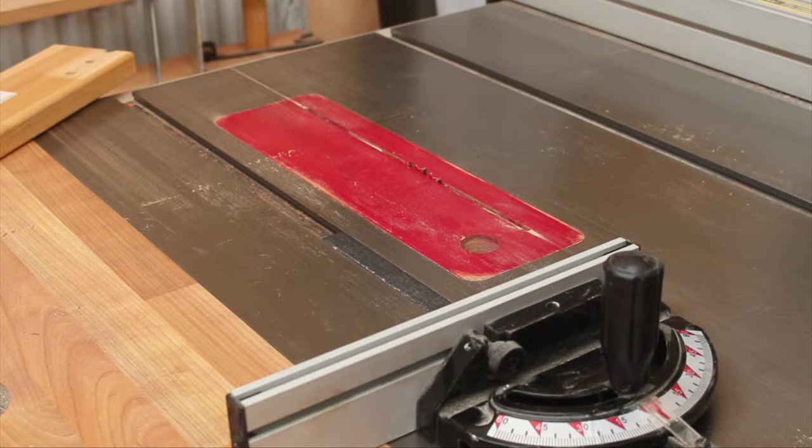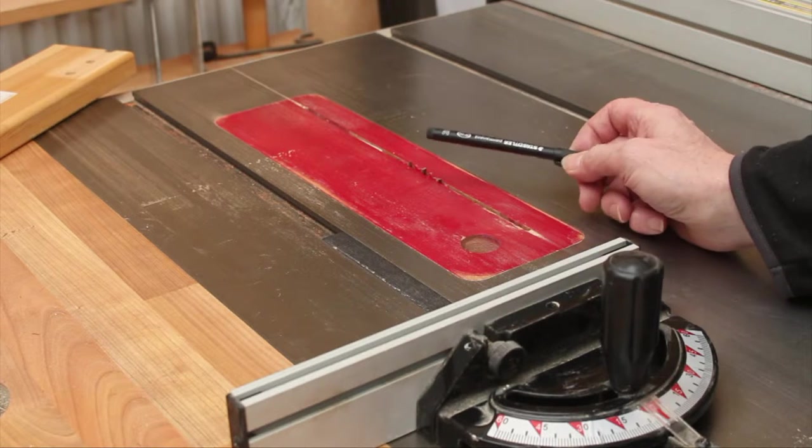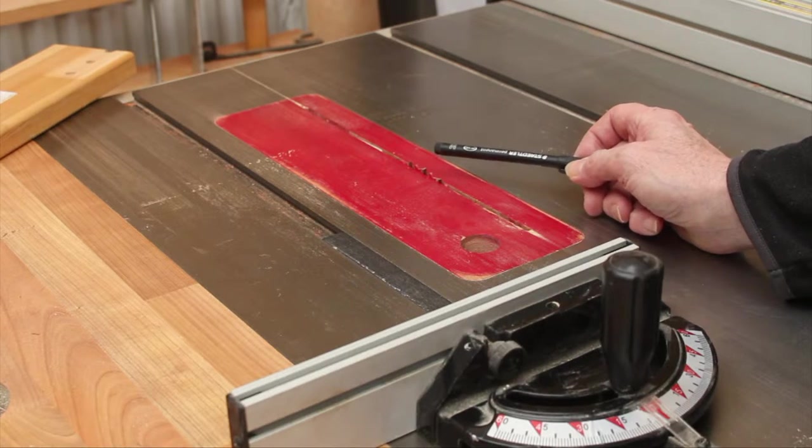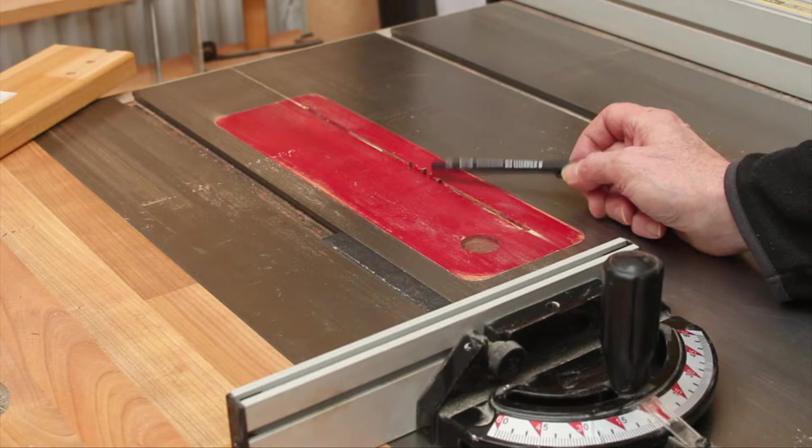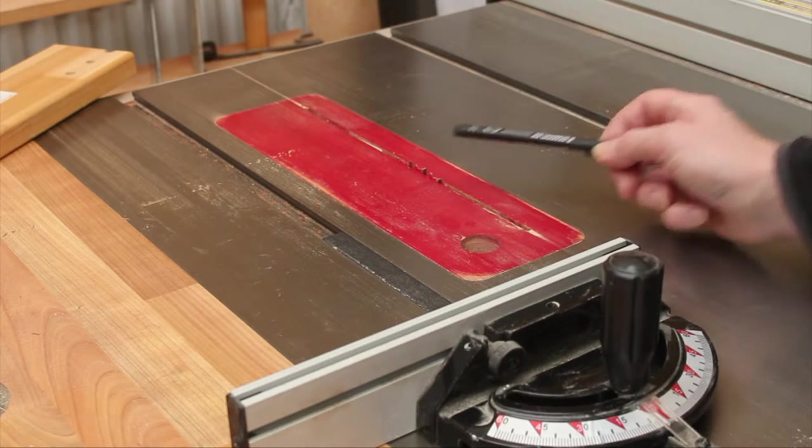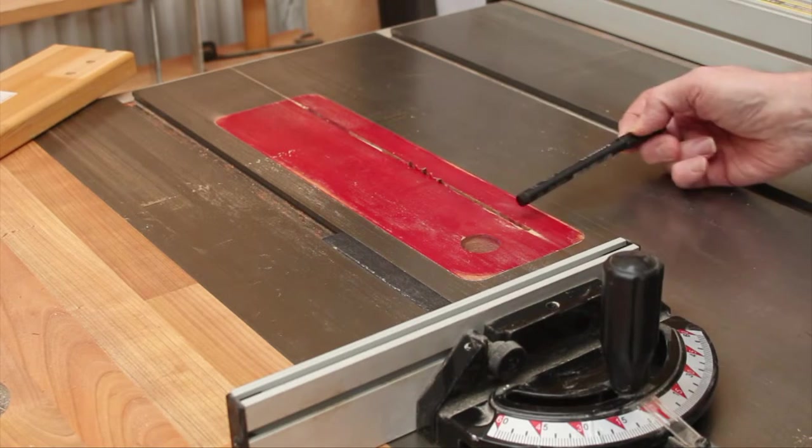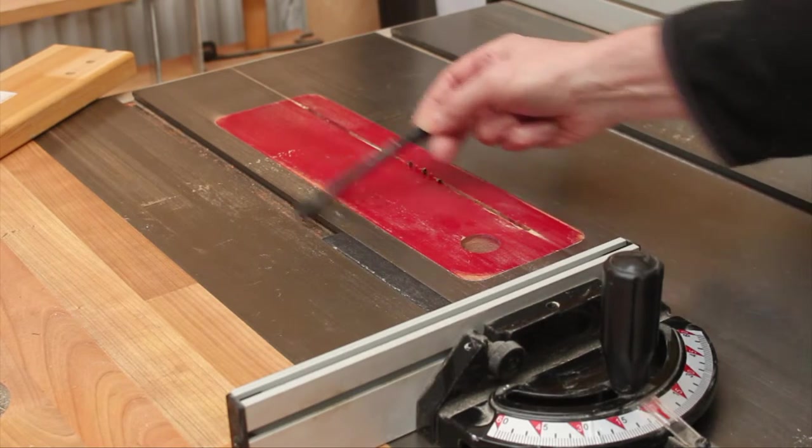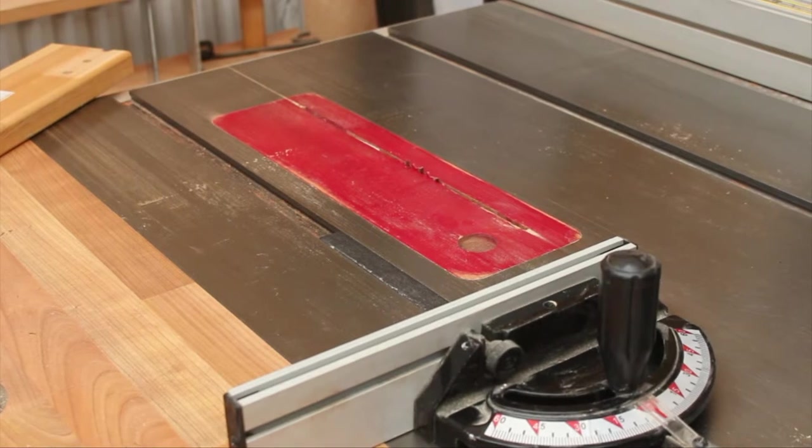I need a lot of accurate cuts on this project, so I'm going to check my saw blade. I've already tested in previous inclinometer videos that this blade is at right angles to the table. Now I want to check that it's parallel to the track here.